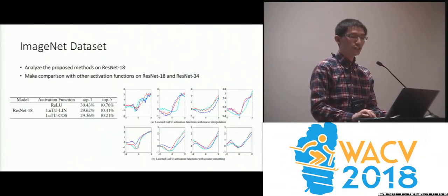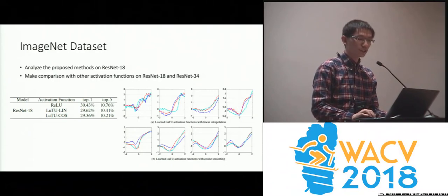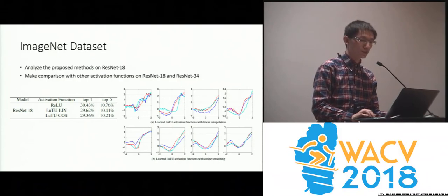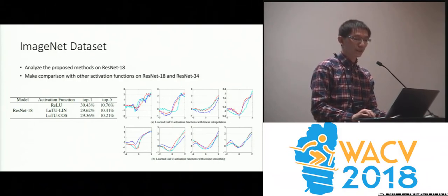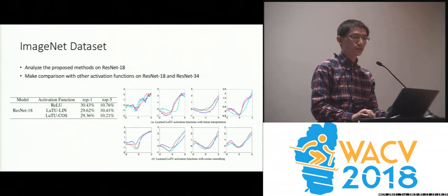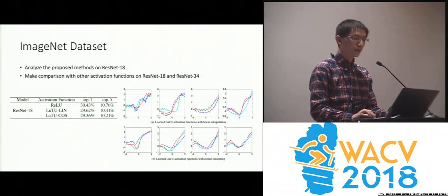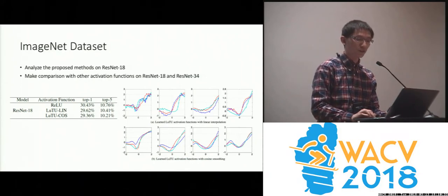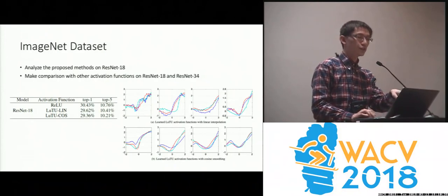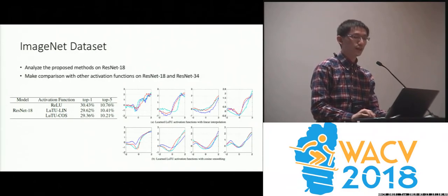We further conduct experiments on the ImageNet dataset, using our activation function on the ResNet models. This table shows the results for ResNet-18. Our method is about 1% better than ReLU, and the cosine smoothing method achieves about 0.3% better than simple linear interpolation. We also plot the shape of the activation functions — they are highly non-linear. Looking at the first row, which is the linear interpolation, those functions do have a lot of local fluctuation, as mentioned earlier.